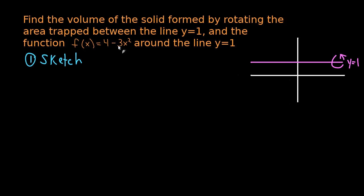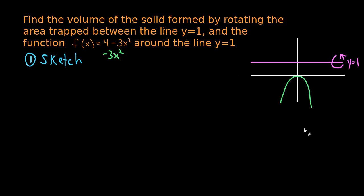We also have this function. To sketch it, first look at the term minus 3x squared and notice that minus x squared is just an upside-down parabola. The factor of 3 doesn't make too much of a difference — it makes it a little skinnier, but this is a perfectly good sketch of minus 3x squared. Then we add the 4, which is the same as rearranging to minus 3x squared plus 4. Adding 4 just shifts the entire parabola up by 4.